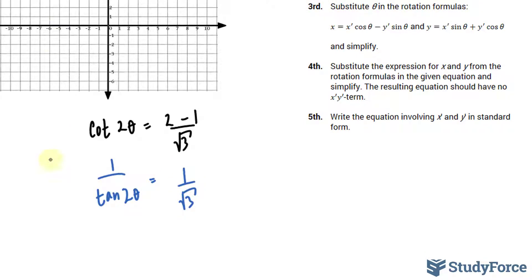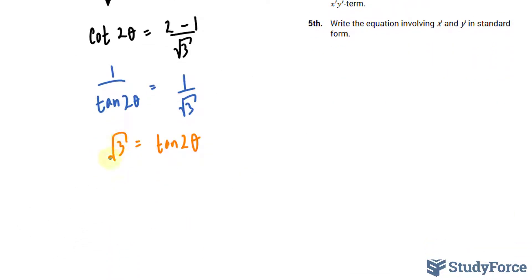Cotangent is a reciprocal trigonometric function. So I'll write down 1 over tangent 2 theta is equal to 1 over the square root of 3. And this is the same thing as, if we multiply both sides by tangent 2 theta, we have the square root of 3 is equal to tangent 2 theta. Now as you know, tangent is a trigonometric function. It's a comparison, a ratio, that compares the opposite over the adjacent. So this is opposite over 1, the adjacent.